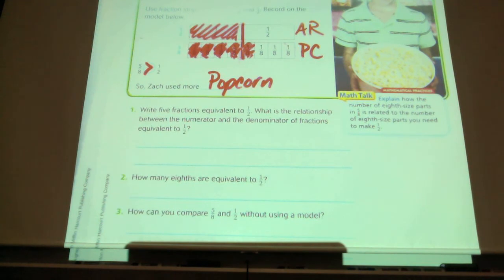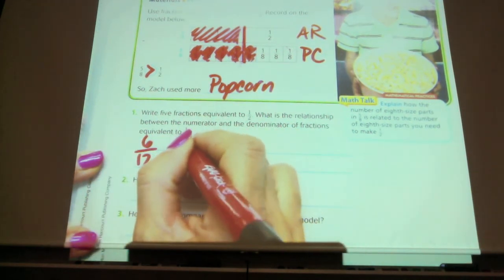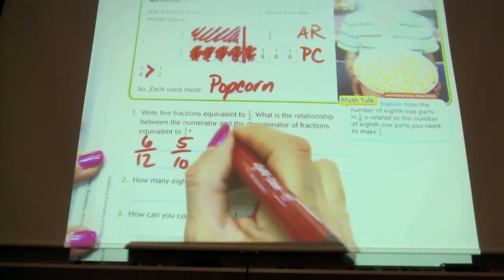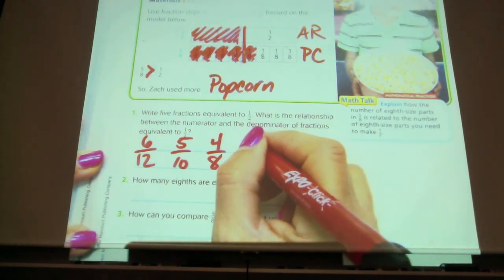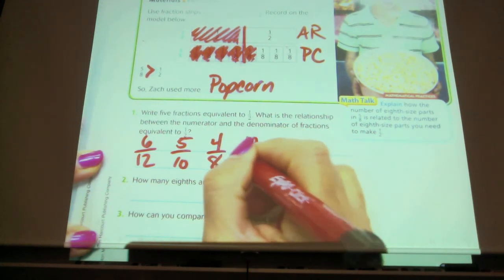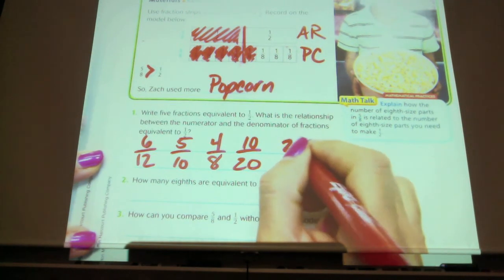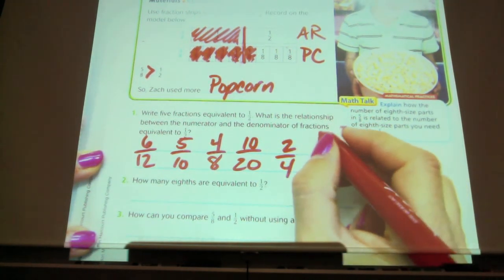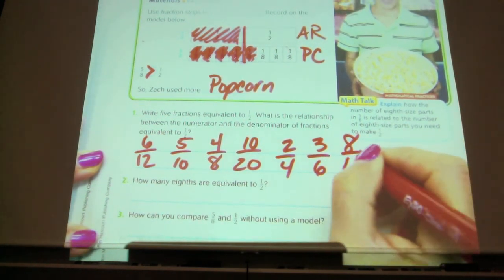Who would like to give me one equivalent fraction? Ronnie? Six-twelfths. Owen? Five-tenths. Preston? Four-eighths. Sean? Ten-twentieths. Benny? Two-fourths. Luna? Three-sixths. Lydia? Eight-sixteenths.